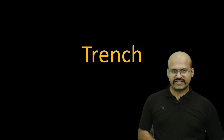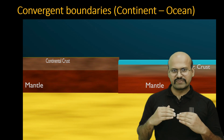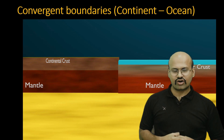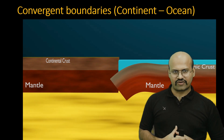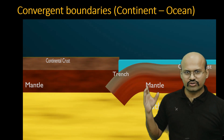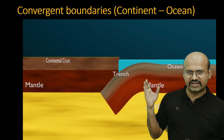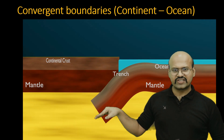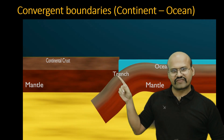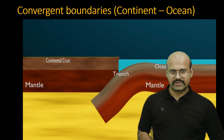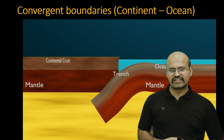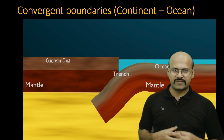Trenches are formed at convergent boundaries — ocean-continent or ocean-ocean convergent boundaries. The oceanic plate, being heavier, starts to subduct, and when it subducts we get the formation of a trench. Trenches can be very deep; the deepest trench in the world is the Challenger Deep, formed in the Philippine Sea.